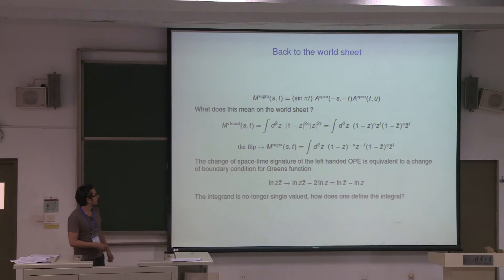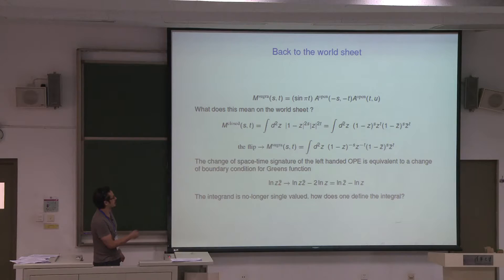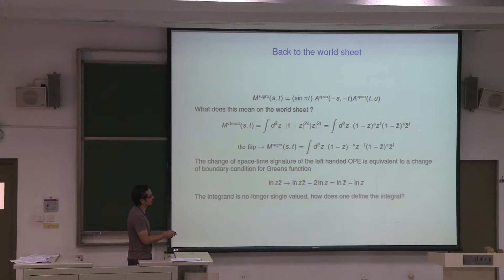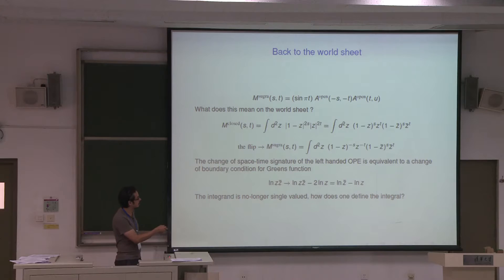But I was really talking about the world sheet — do I actually have a world sheet theory that describes this? Because I've identified that all I'm doing is this flipping, the answer is yes. Consider the tachyon amplitude in the closed string sector for simplicity — to avoid dealing with polarization vectors. I can write it in terms of left-handed and right-handed modes since I'm going to do the flipping on one side. When flipping, I'm flipping the signature of the kinematic invariant.